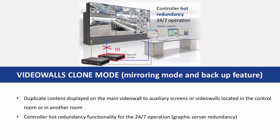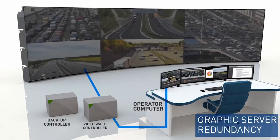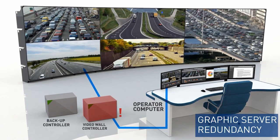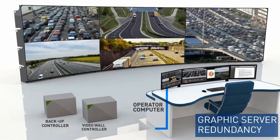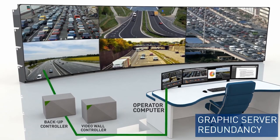PolyWall also provides an opportunity to mirror video walls to auxiliary screens — for instance, located in a different room. In a hypothetical scenario where the head of an organization would like to see what is displayed on a video wall without stepping out of their office, PolyWall provides the tool to implement just that. This feature also helps enable controller hot redundancy, serving as a backup and storing the information displayed on the video wall in case the controller suddenly stops working. The system will switch to backup hardware and PolyWall will reproduce the screen layout on the video wall.